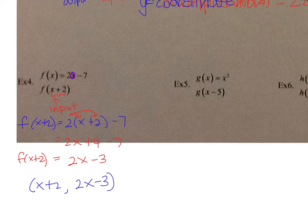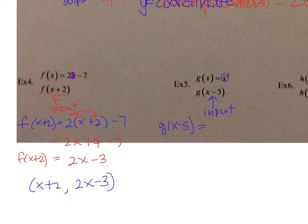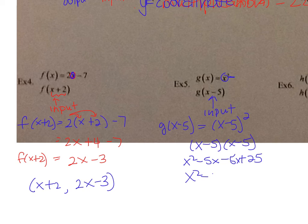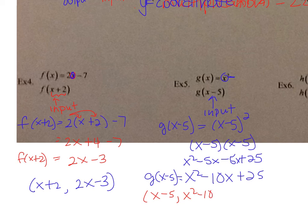For g(x) = x², find g(x − 5). The input is x − 5, so plug it in: g(x − 5) = (x − 5)². Expanding: (x − 5)(x − 5) gives x² − 5x − 5x + 25 = x² − 10x + 25. So g(x − 5) = x² − 10x + 25, with input x − 5 and output x² − 10x + 25.